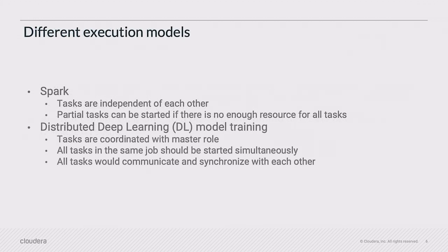The difference is that in Spark you have a different execution model than with distributed deep learning. With Spark, tasks are run independently of each other. Partial tasks can be started, especially if there aren't enough resources, and they start as needed. If they fail for whatever reason or run slowly, Spark itself can handle it without actual intervention from the user.